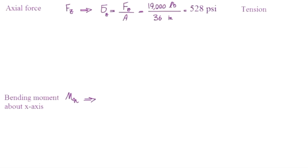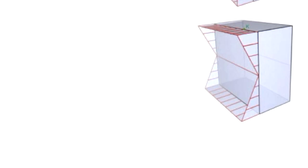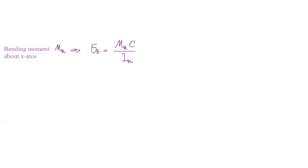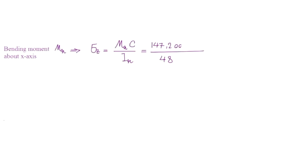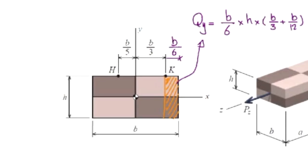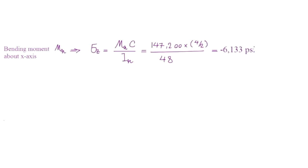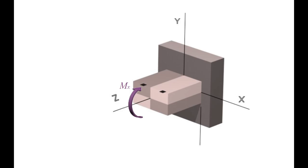Now let's determine the stress caused by bending about the x-axis. Everything has subscript of x. The stress distribution caused by that bending moment has zero value at the x-axis and is maximum on the top and bottom. Sigma = Mx·C / Ix. Mx is negative 147,200 pound-inch. Ix is 48. C is the distance of K to the x-axis, which is half of 4 inches, giving negative 6,133 psi. The stress is negative because the moment is negative, producing compression on top where point K is located.